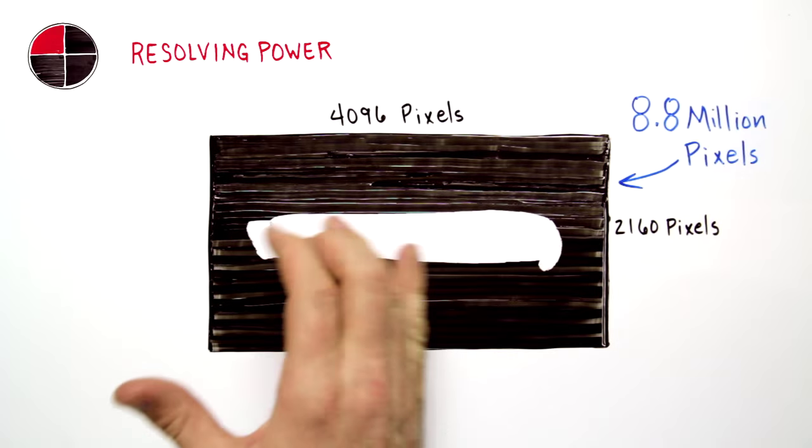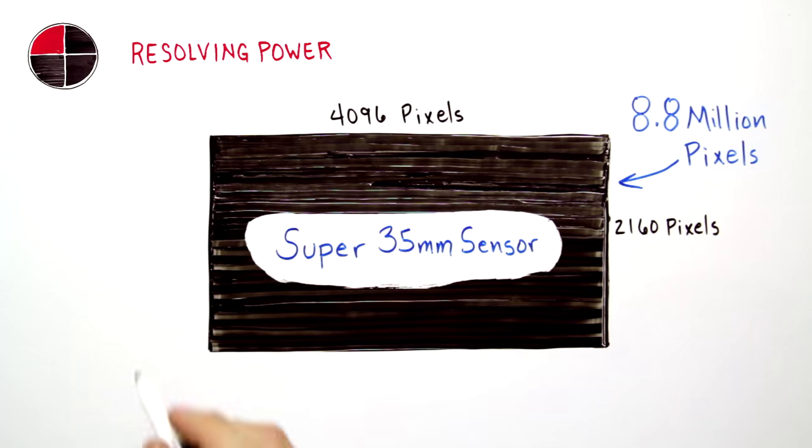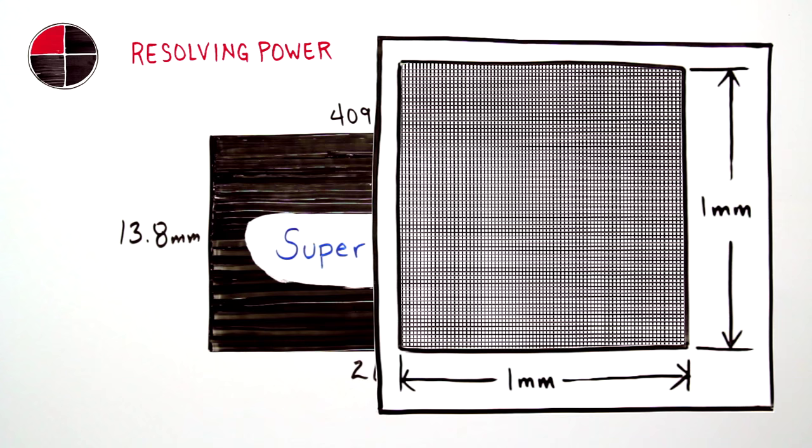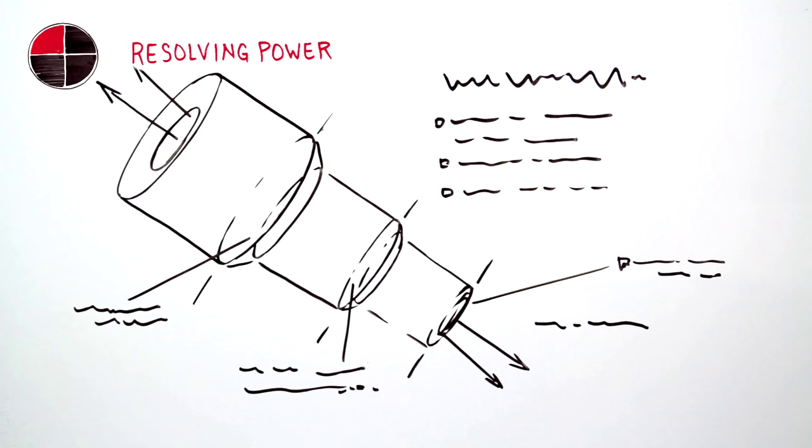On a 4K Super 35mm sensor, high resolving power equates to 80 horizontal and vertical line pairs per millimeter. Achieving that resolving power requires sophisticated optical design,